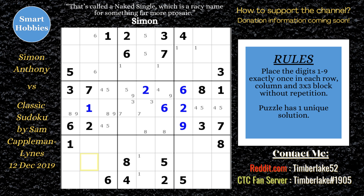A key thing to notice about Simon's technique: if he sees a cell with restriction — only two possibilities — he'll mark that because it leads him to look at other restrictions. It's very efficient. Instead of marking all pencil marks across the board, he starts with the ones most likely to yield a candidate to eliminate or a cell to solve. I see this a lot on his channel and also on Shaqq and Sudoku — they also do a really good job with this.